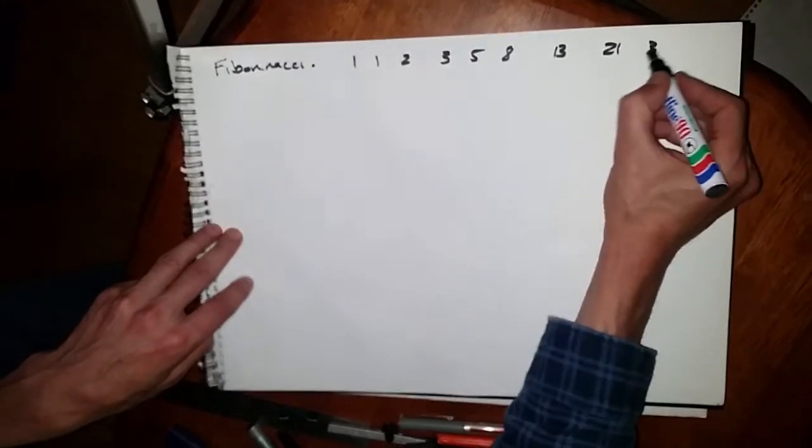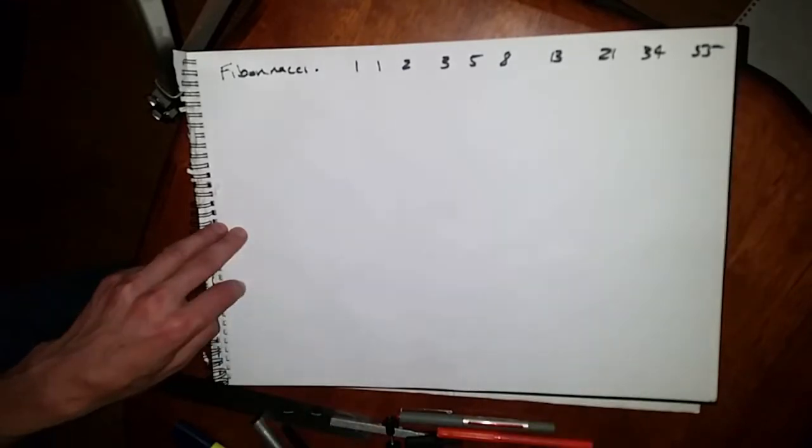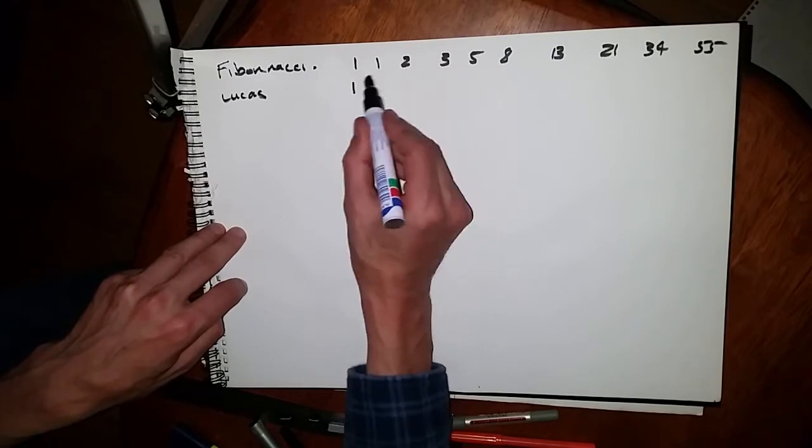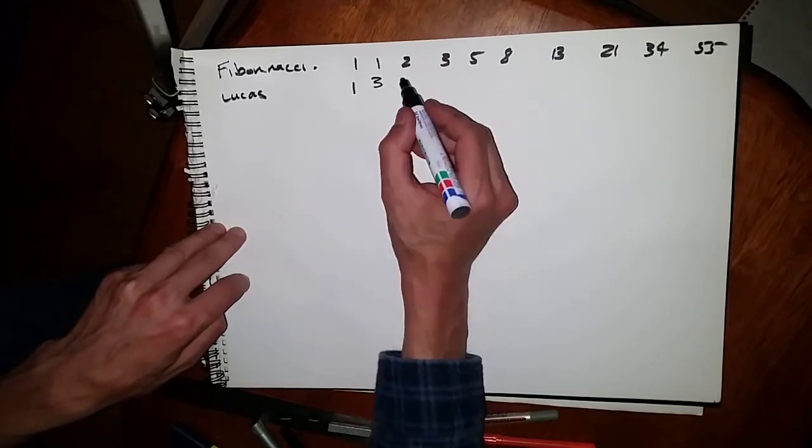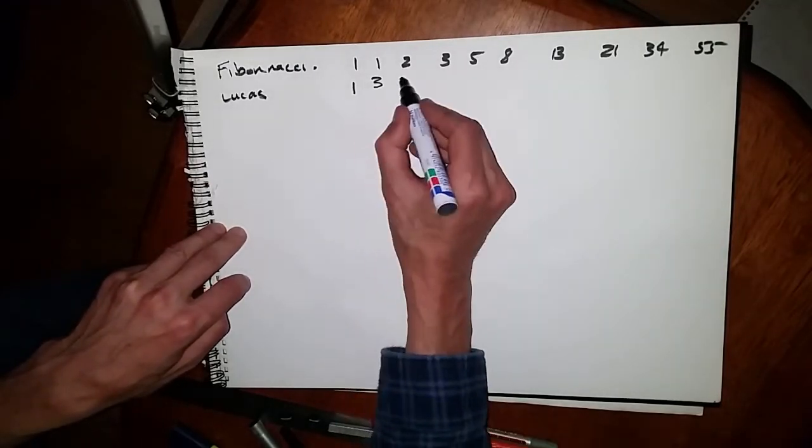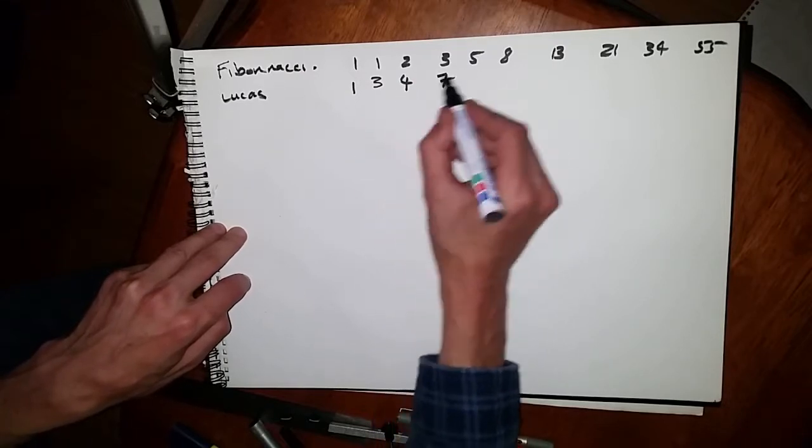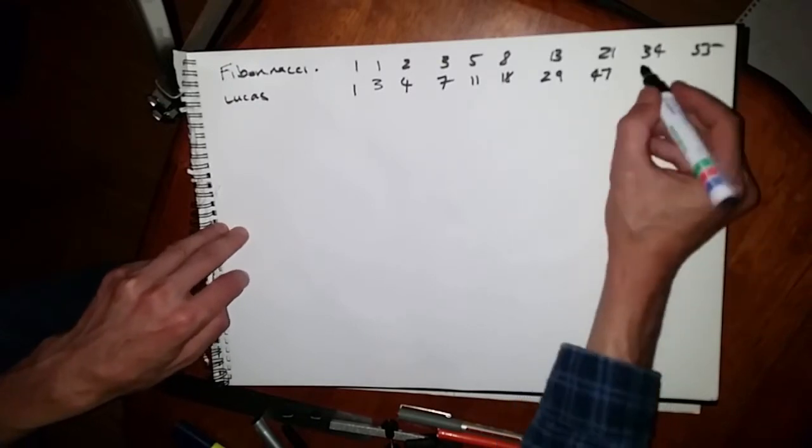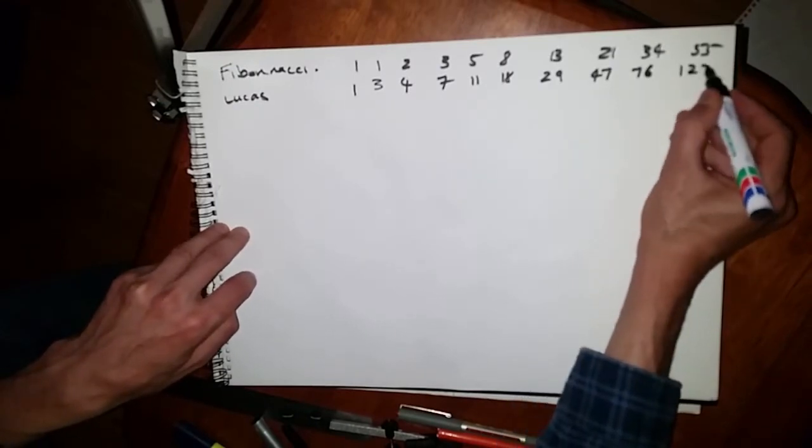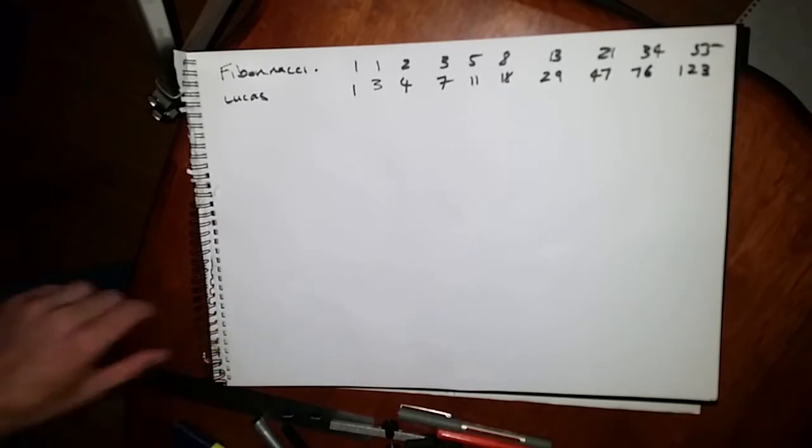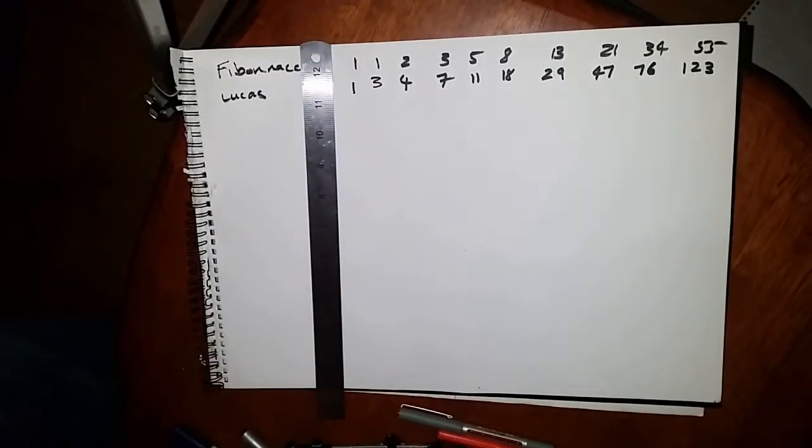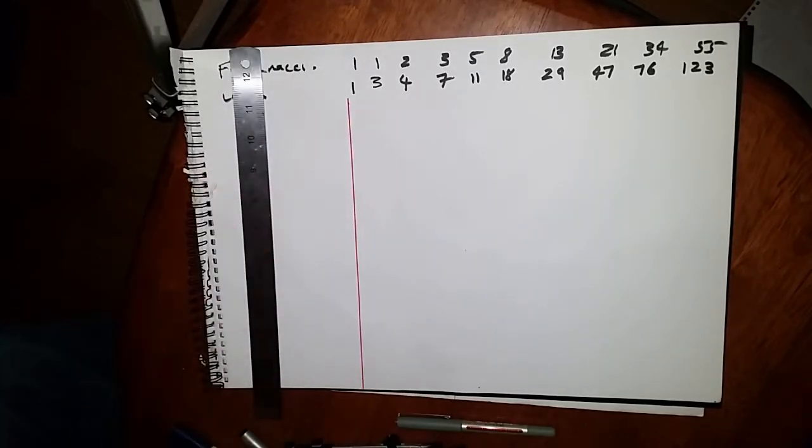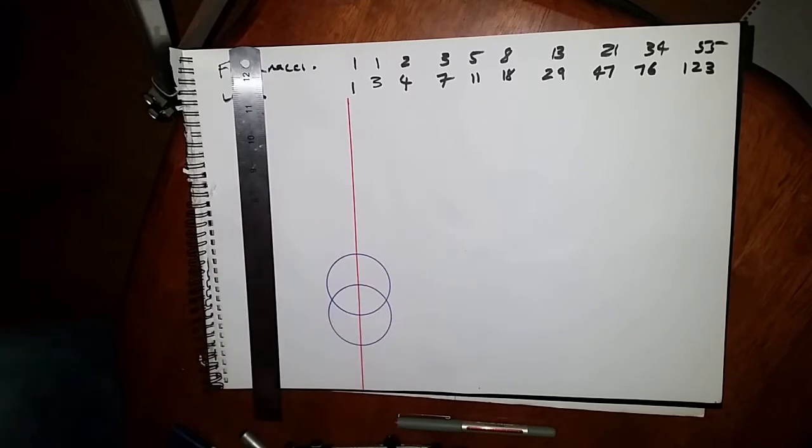Fibonacci numbers: 1, 1, 2, 3, 5, 8, 13, 21. So 1 plus 1 is 2, 1 plus 2 is 3, etc. Lucas would begin exactly the same way but we'll begin with a 3. If we begin with a 2 we'd get a repeat of the Fibonacci numbers. So the Lucas begins with 3: 1, 3, 4, 7, 11. Now we'll draw a Fibonacci spiral using the Vesica once again.